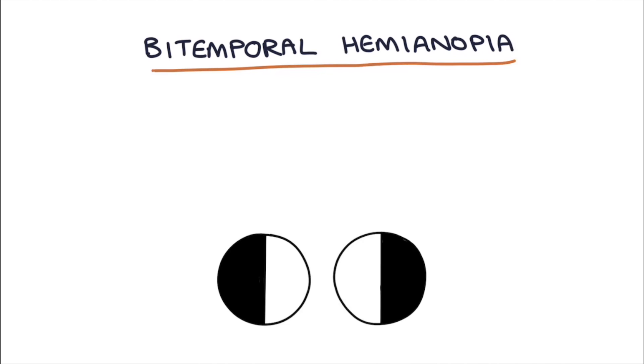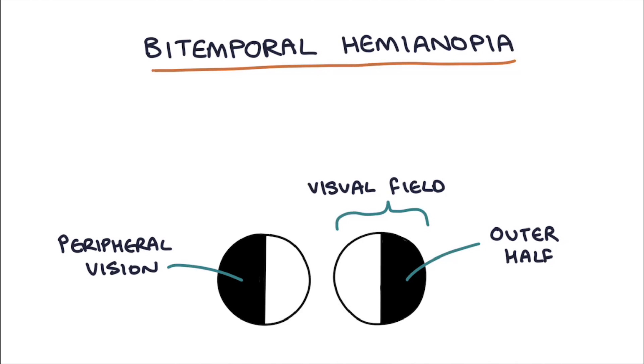Bitemporal hemianopia refers to a condition where both of the outer halves of the visual fields are lost, so the patient won't be able to see things in their peripheral vision in the outer half of their eyes.